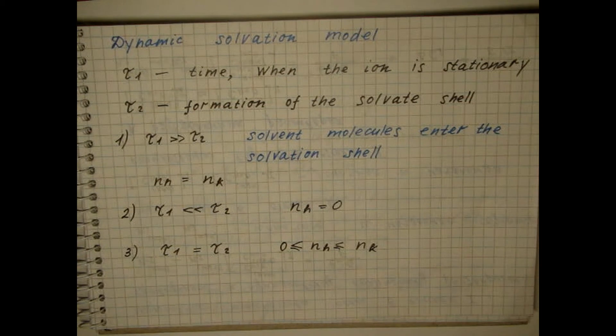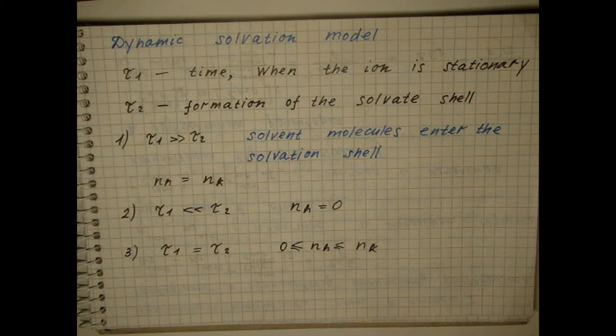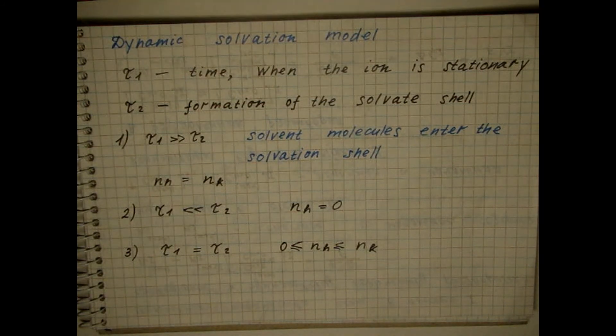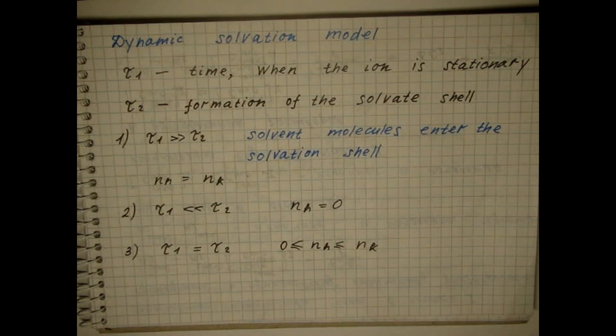Moreover, different methods for varying degrees reflect the process of replacing dipoles in the solvation shell of the ion, and this leads to a significant discrepancy between the results for solvation numbers.